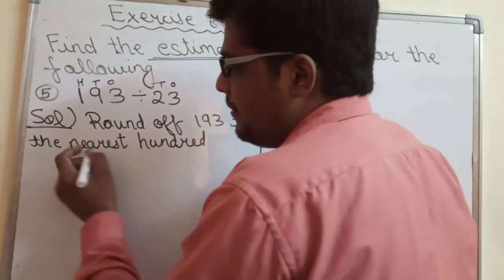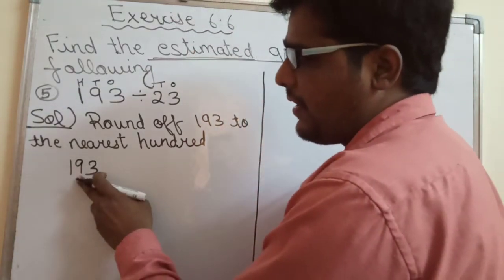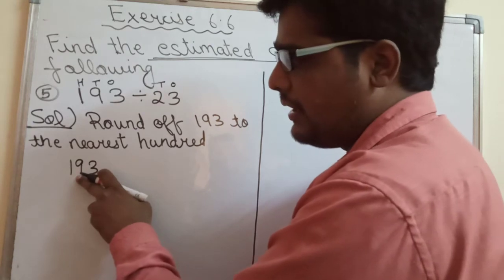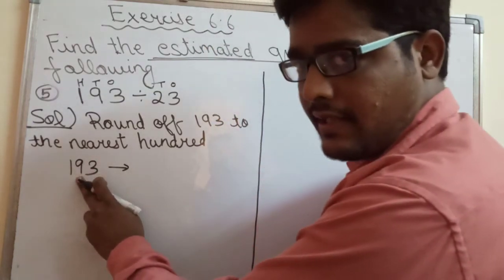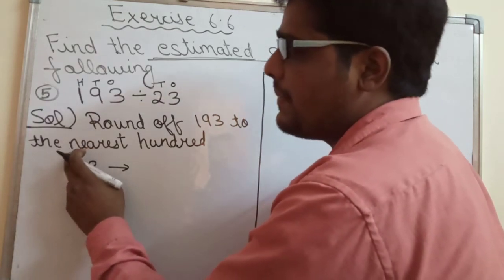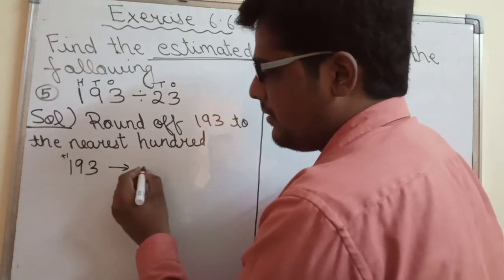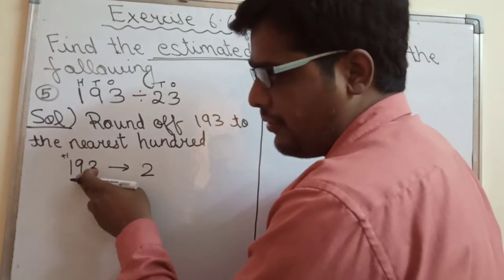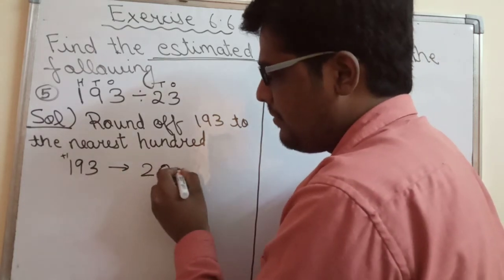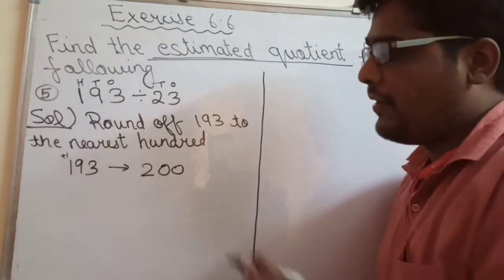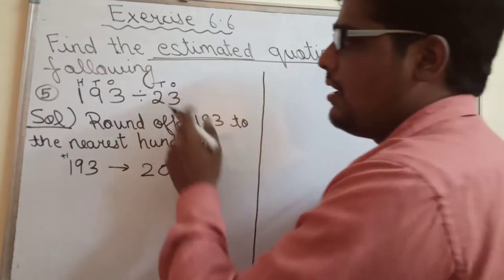So what we will do, look at the number 193. Tens place me number dekho, agar yehaan par 5 ya 5 se zyadha hota hai to hum hundreds place me one add karegay. So one plus one is two, or jo tens place ka digit hai or ones place ka digit hai, wahan par hum zeros put karegay. So 193 will be rounded off to 200.